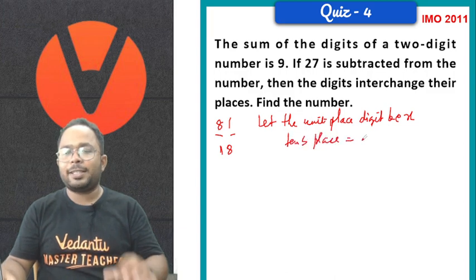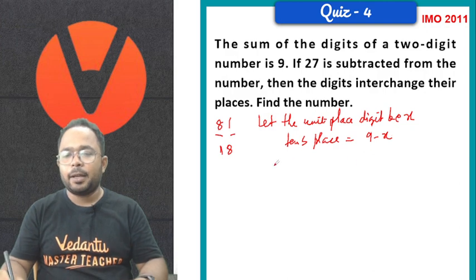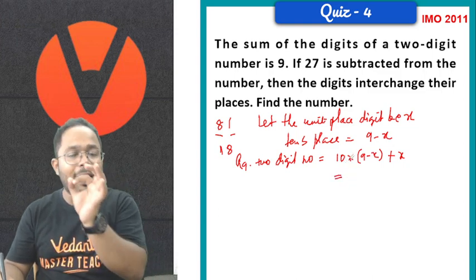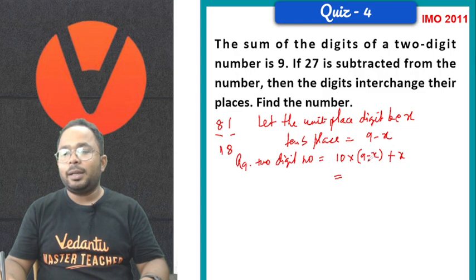So, what we can take is let the units place digit be x. So, the 10s place digit would be, obvious the sum is 9, it would be 9 minus x. Now, required 2 digit number. If you want to make the 2 digit number, we have to make it multiplied with the place value. 10 into 9 minus x plus x. That gives 90 minus 9x.